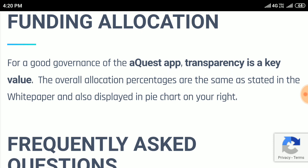Transparency is a key value. The overall allocation percentages are the same as stated in the white paper and also displayed in the pie chart on your right.